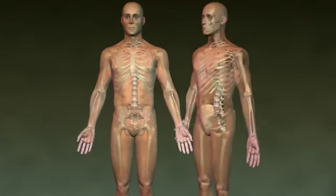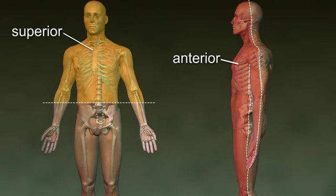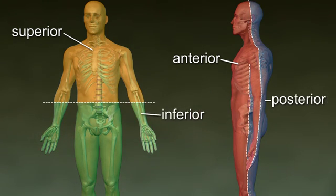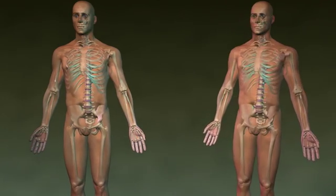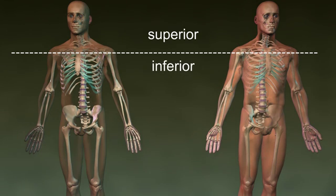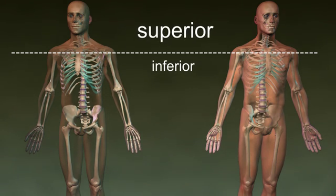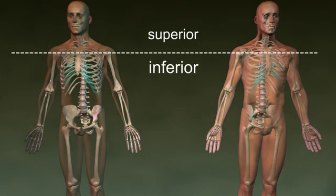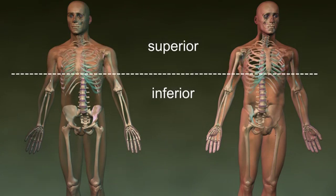Let's take a look at body directions. Directional terms describe the positions of structures relative to other structures or locations in the body. They are grouped in pairs of opposites. Superior and inferior: think of the head as the superior part of your body. Superior means upper or above, while inferior means lower or below. Your shoulder is superior to your elbow.